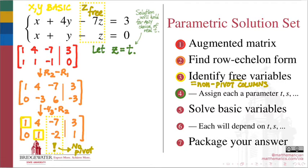Next, for each of the basic variables, or bound variables, solve for the value of those variables in terms of the free parameter. In this example, we'll use back substitution to solve for the basic variables x and y in terms of the free variable z.